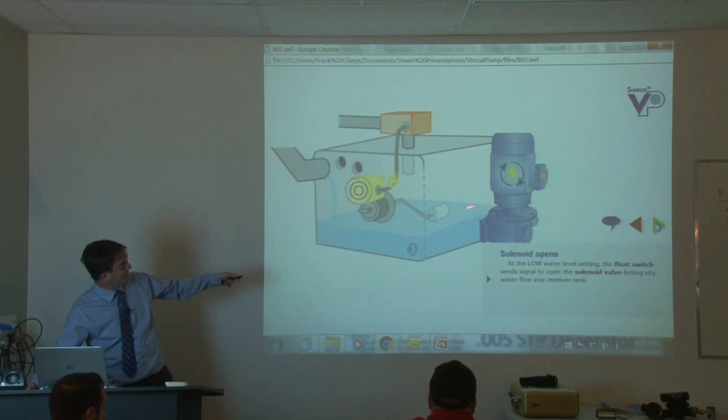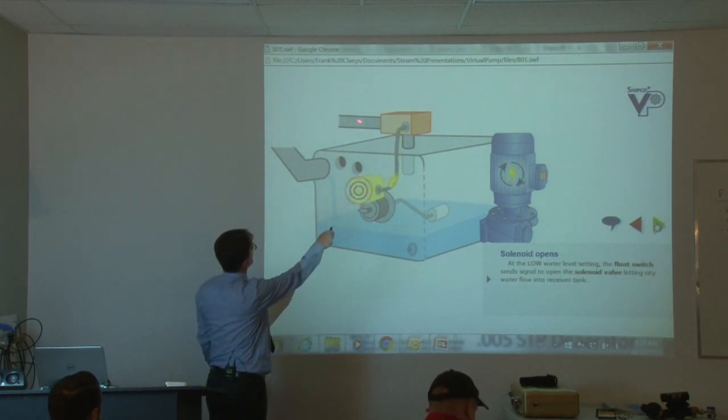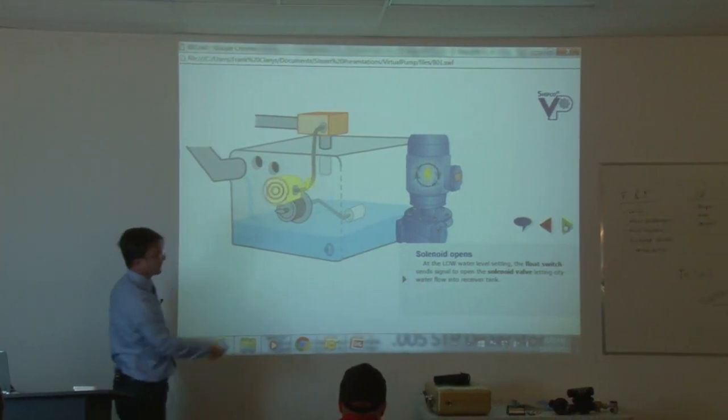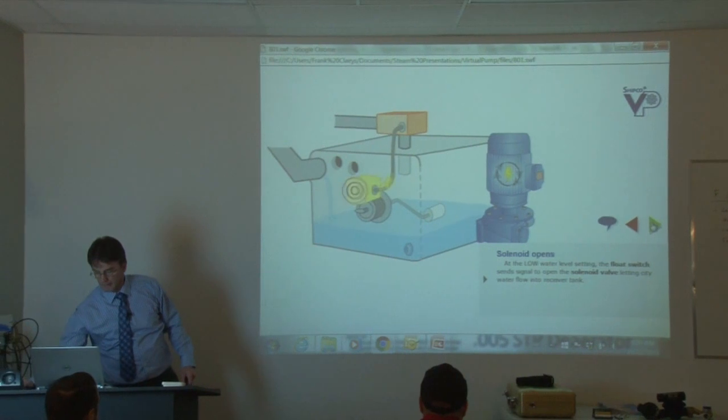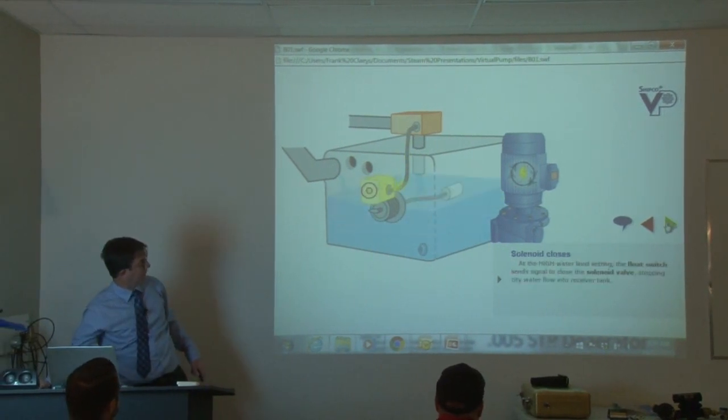There's always less condensate than there is water required in your boiler. So as your float falls down, it doesn't activate the pump. It tells the solenoid to turn on. So this is the description says city water, but typically it would be softened or treated somehow. So this is your fresh makeup water that comes in through your solenoid and dribbles down into your tank. And then that way, we don't run out of water and the boiler is satisfied.